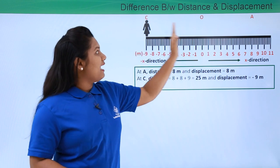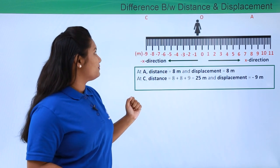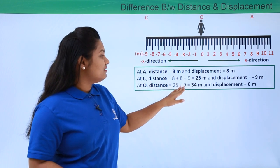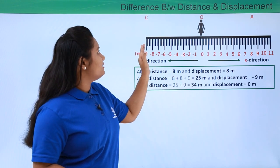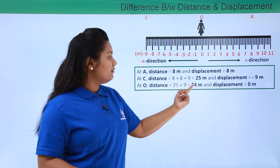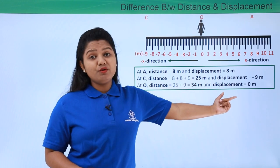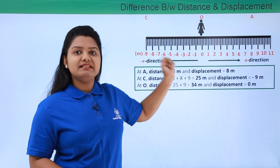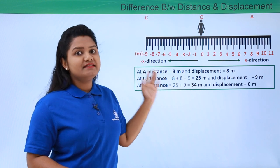Now suppose she moves back to her initial position, which is point O. At this point, the distance increases by nine meters again since she has travelled from C to O, so the distance becomes 25 plus 9, which is 34 meters. But at the same time, the displacement becomes zero meters because the initial and the final position of this girl is the same — that is point O.